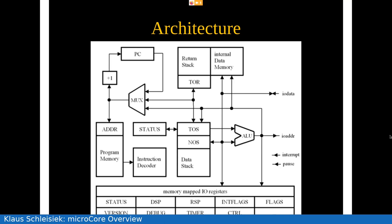The program memory has an address register — that is new in MicroCore. MicroCore used to have an instruction register, but that was unfortunate because in FPGAs, block RAMs are built in such a way that for a fetch you need to latch the address first, which gets latched inside the block RAM, and then in the next cycle you can access the memory. So instead of the instruction register, I now have a program address register. There are also an extensive list of memory-mapped registers: the status, data stack pointer, return stack pointer, interrupt flags, and flags that don't generate interrupts.